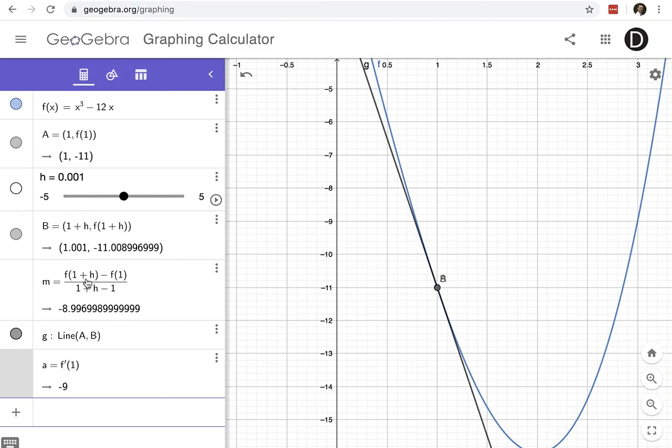I can use this ratio, it's called the difference quotient or the average rate of change between two points, I can use this value to calculate approximations of the slope of the tangent line. And the smaller my value h is, the closer the approximation.